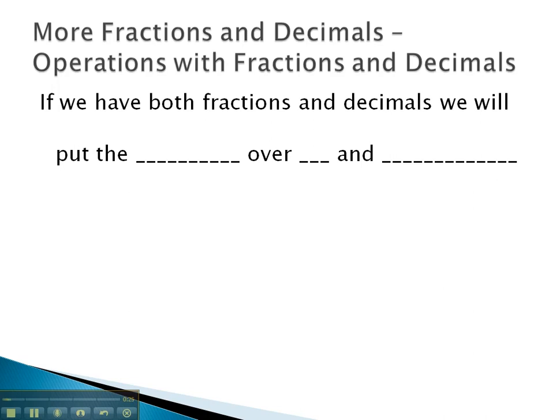So a third option that's better is to kind of cheat and make a fraction a decimal, or maybe a better way to say that would be if we have both fractions and decimals, what we will do is put the decimal over 1 and simplify, and that'll give us a fraction with a decimal inside it.